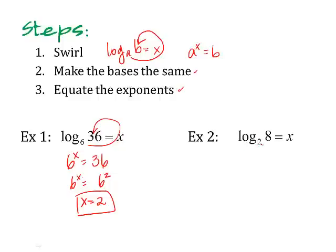Let's try number 2. Swirl it. Log base 2 of 8 equals x, so 2 to the x power equals 8. So now let's get our bases the same, so 2 to the x. Now, think about 8. 8 is 2 times 2 times 2, so that is 2 cubed. Now that our bases are the same, I can set the exponents equal, so x equals 3.